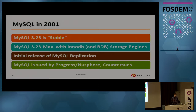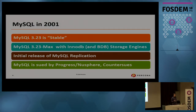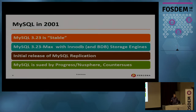In 2001, MySQL version 3.23 went GA or stable. That is also the time when the InnoDB storage engine was introduced in the MySQL Max edition, as well as the initial release of MySQL replication. Another interesting event was that MySQL was sued by Progress Software's NuSphere, in a very famous lawsuit testing GPL in court. Obviously MySQL won, and that's why the journey continues.